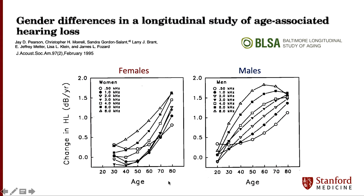This also holds true not just in cross-sectional studies, but in longitudinal studies. In the Baltimore Longitudinal Study of Aging, audiograms were taken and people were followed for up to 23 years. Here you can see the change in hearing loss plotted as a function of age group. Males have more hearing loss — higher changes in their hearing — that start sooner at younger ages compared to females.